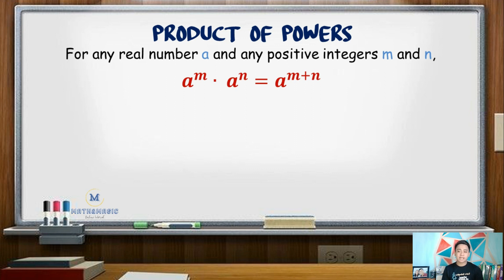For example, find the product of a cubed and a squared. Since the bases are the same — that is variable a — all we need to do is to add the exponents. So we have 3 plus 2, and that gives us a value of a raised to 5, or a to the power of 5.